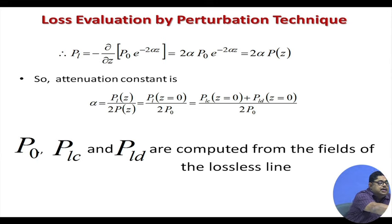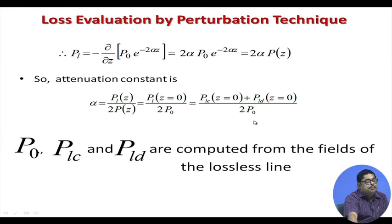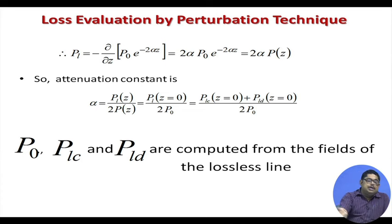From the power loss expression, α = P_L(z=0) / (2P(z=0)) = (P_{Lc} + P_{Ld}) / (2P₀). If we can find P_{Lc}, P_{Ld}, and P₀ from the known fields of the lossless line, we can accurately calculate α. This is the perturbation theory approach — since we already have the lossless fields, we can find all these power quantities and determine the attenuation constant.